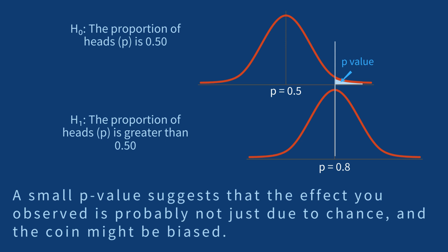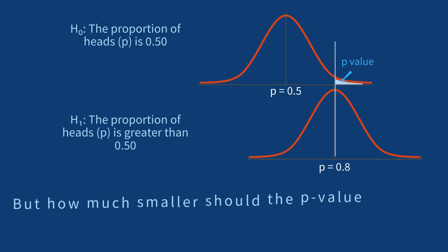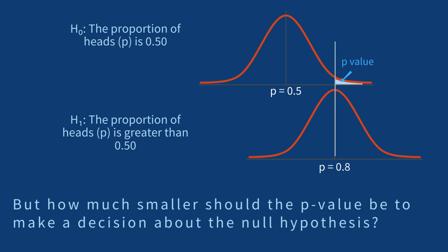However, the p-value does not guarantee that the observed difference is statistically significant. But how much smaller should the p-value be to make a decision about the null hypothesis? There's always a chance of error, and it's crucial to determine how small the p-value needs to be to confidently make a decision about the null hypothesis.